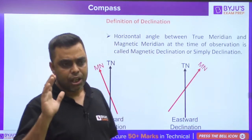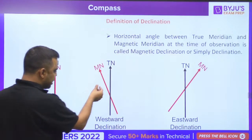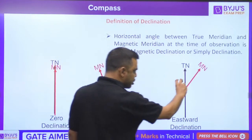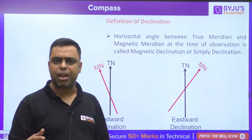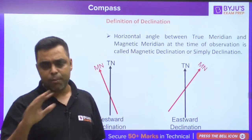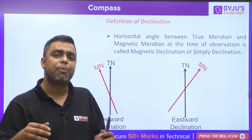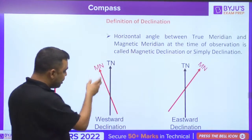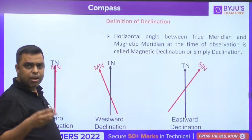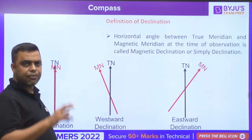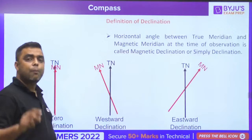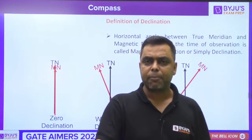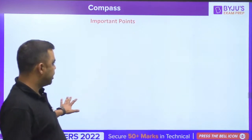When the magnetic north is on the east side of true north, this is called eastward declination. Westward declination is also called negative declination, and eastward declination is also called positive declination. As a mnemonic: anti-clockwise declination is remembered as negative, and clockwise declination is remembered as positive.